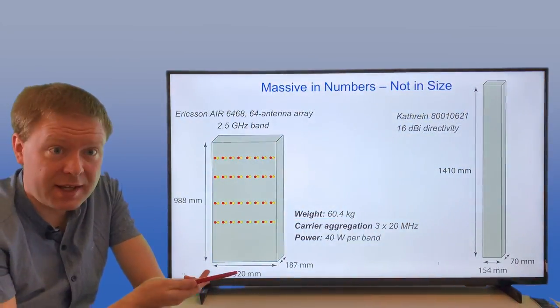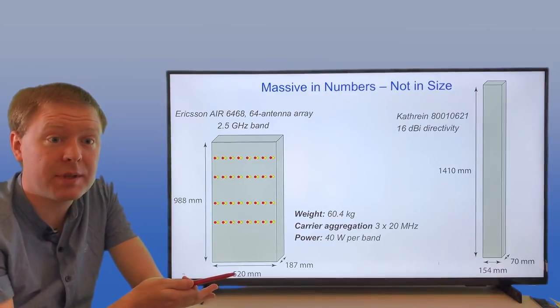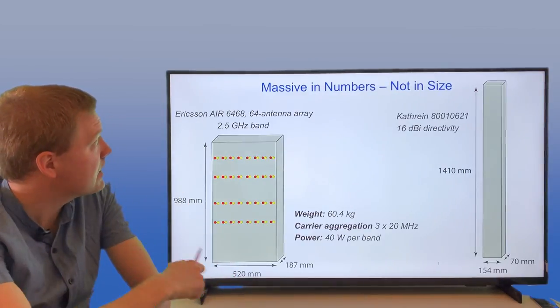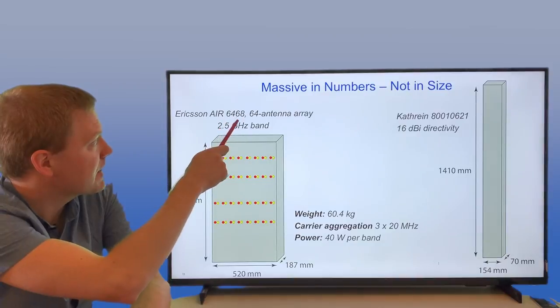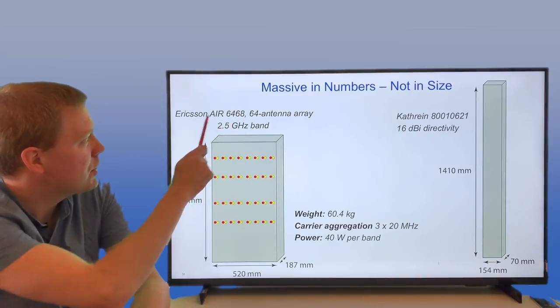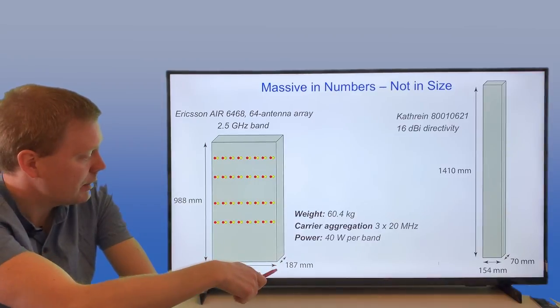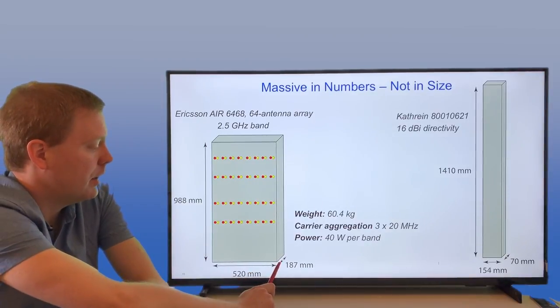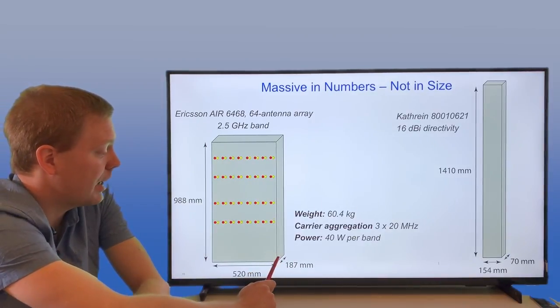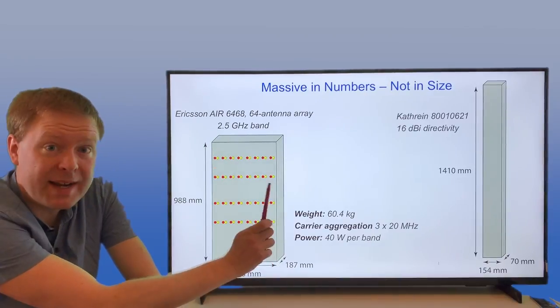In terms of size, this is massive in numbers but not in size. Here is the Ericsson Air 6468, a 64 antenna array for the 2.5 gigahertz band. It's a meter tall, half a meter wide, and 187 millimeters in thickness. It weighs 60 kilos.